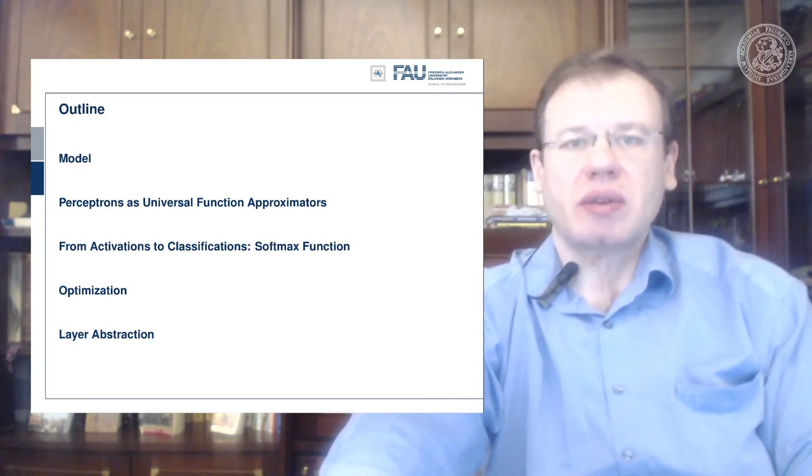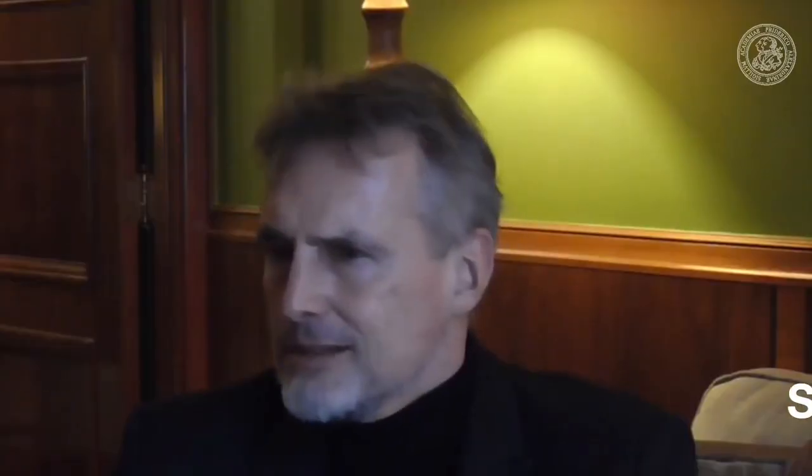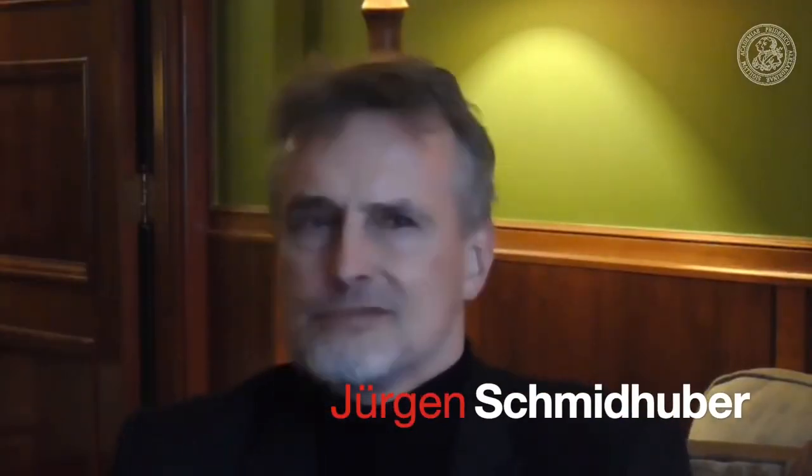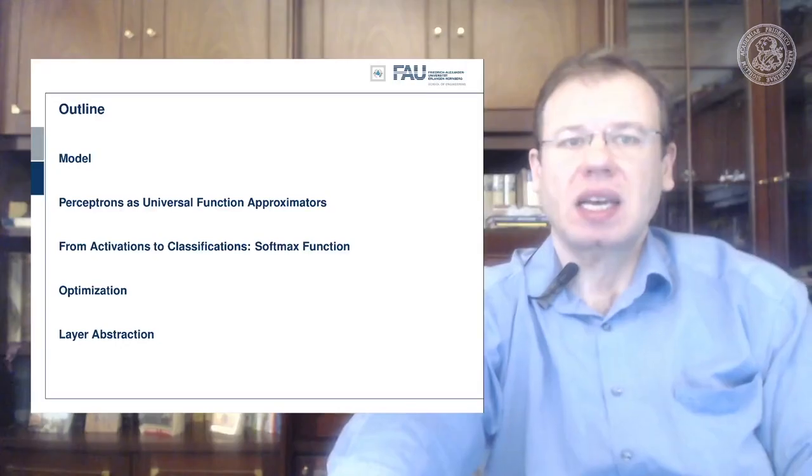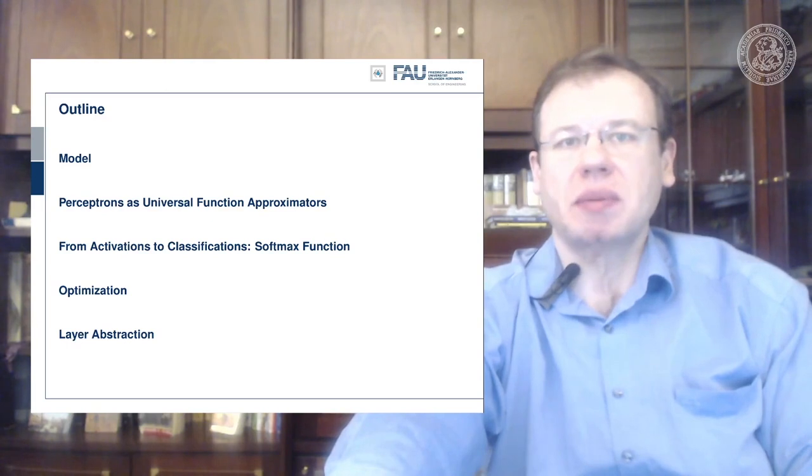One important block will be about universal function approximation where we will essentially show that neural networks are able to approximate any kind of function. This will then be followed by the introduction of the softmax function and some activations. In the end we want to talk about how to optimize such parameters and in particular we will talk about the backpropagation algorithm.